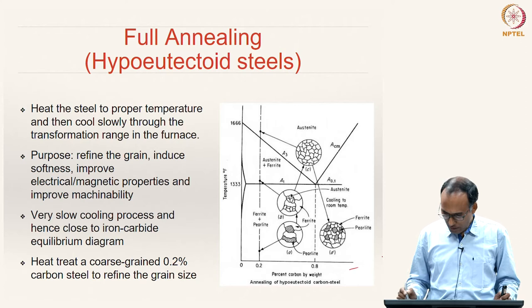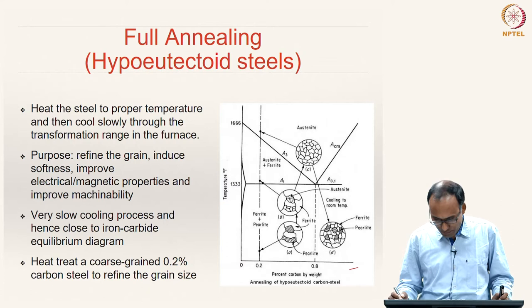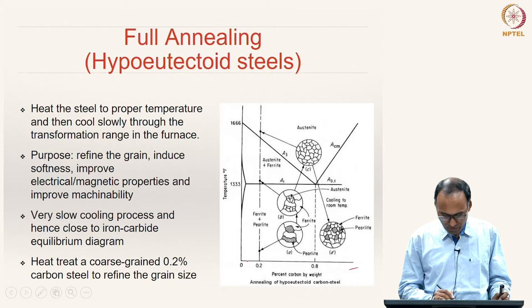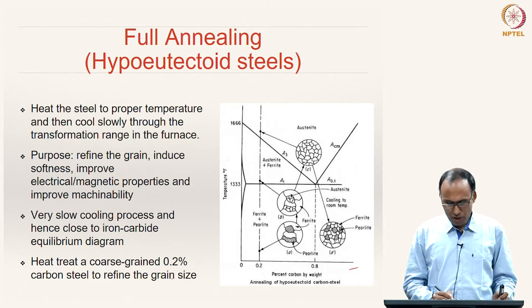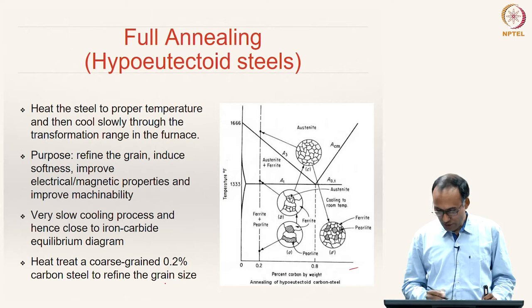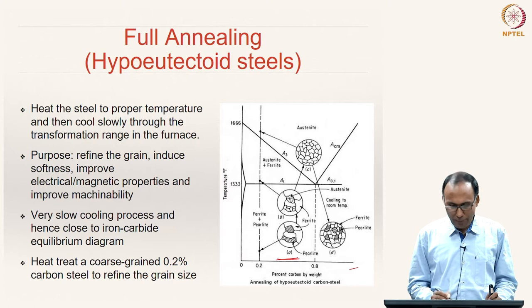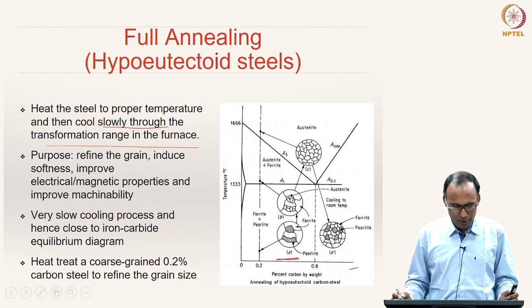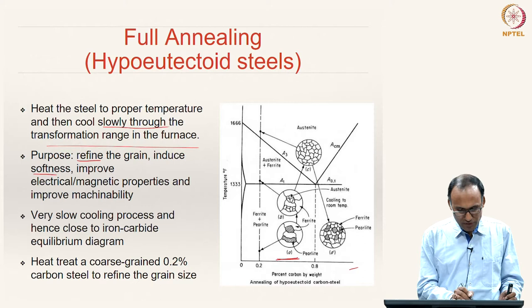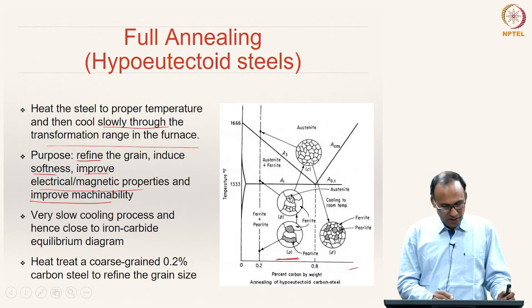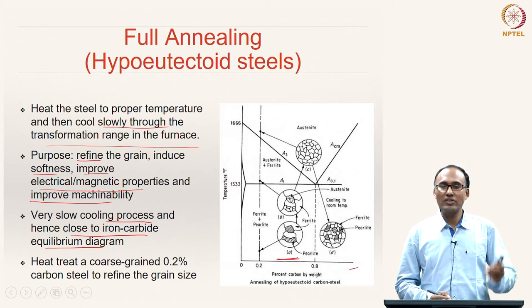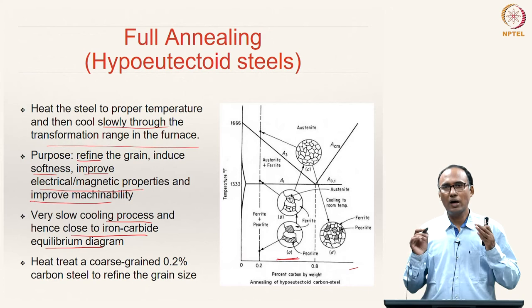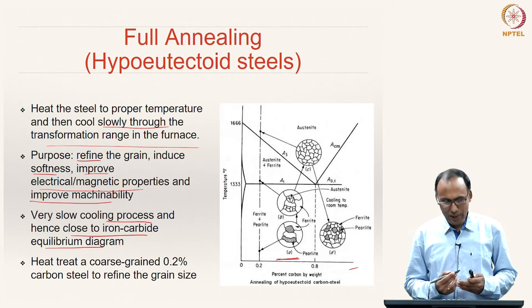Here we show the iron-carbon diagram in the heat treatment zone. The process is to heat the steel to the proper temperature and then cool slowly through the transformation range in the furnace. The purpose of full annealing is to refine the grain, induce softness, improve electrical or magnetic properties, and improve machinability. It is a very slow cooling process, close to the iron-carbon equilibrium diagram.